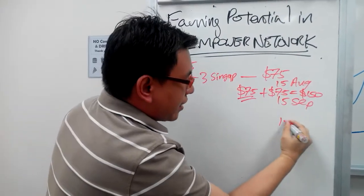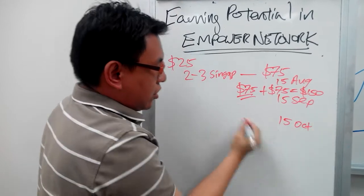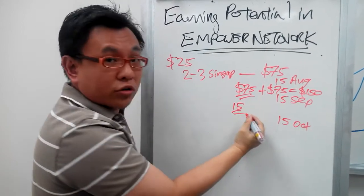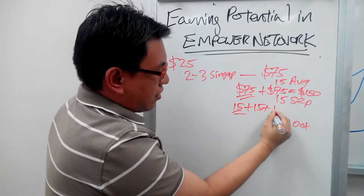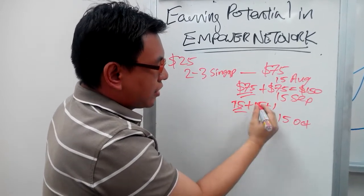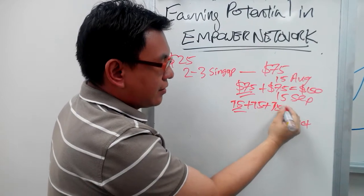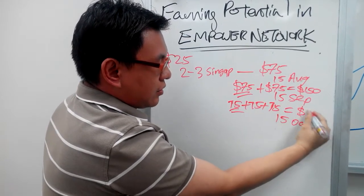Assuming you do the same thing again for October, you would have made $15 for October and $15 for September and $15... Sorry, $75 from each of the month and you would have made $300.